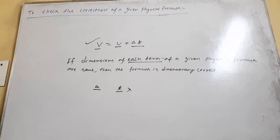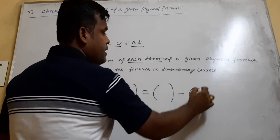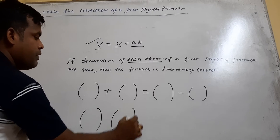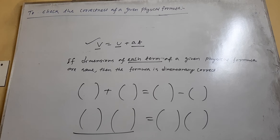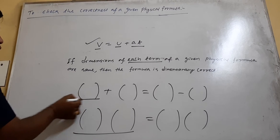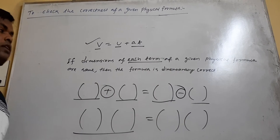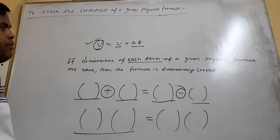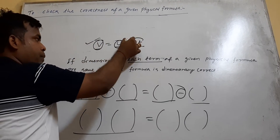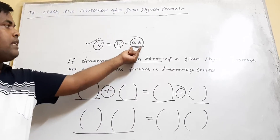That means the terms are either in sum form or difference form. If they are in product form, then they cannot be regarded as individual terms — the whole product will be one term. For example, in v equals u plus at, v is one term, u is one term, and at as a whole is another term.